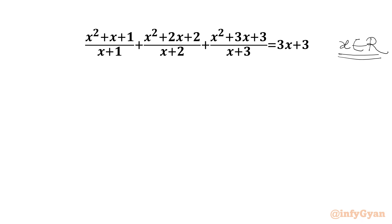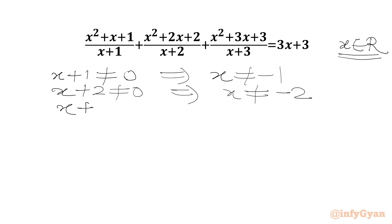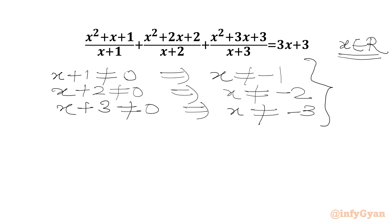We will begin by noting that denominators cannot be 0. So x plus 1 cannot be 0, meaning x cannot be negative 1. x plus 2 cannot be 0, so x cannot be negative 2. And x plus 3 cannot be 0, so x cannot be negative 3. These three x values are restricted values.